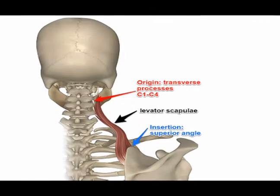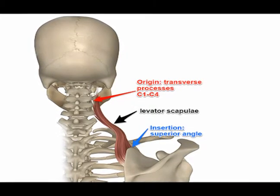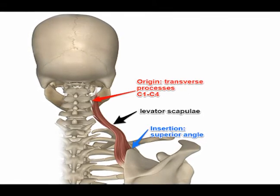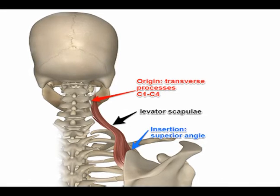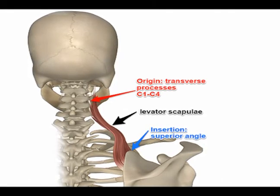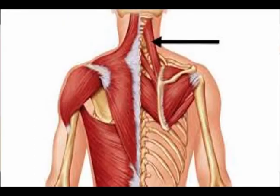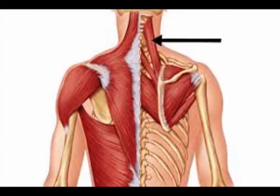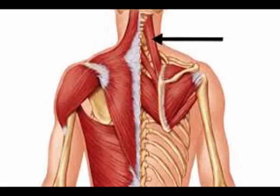Again, the origin point for the levator scapula muscle is the posterior tubercle of the transverse process of cervical vertebrae C1 through C4, and the insertion point is on the superior medial aspect of the scapula. The concentric action is elevation of the scapula and rotation of the scapula so that the glenoid fossa is tilting inferior.